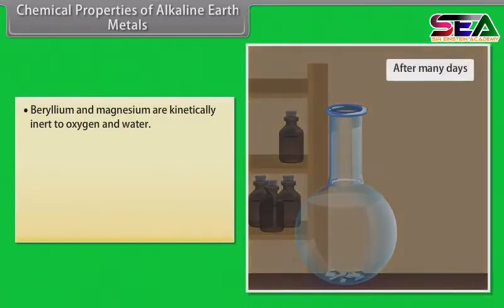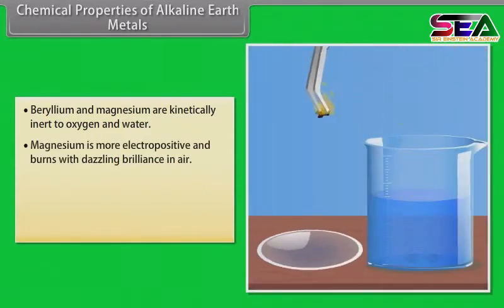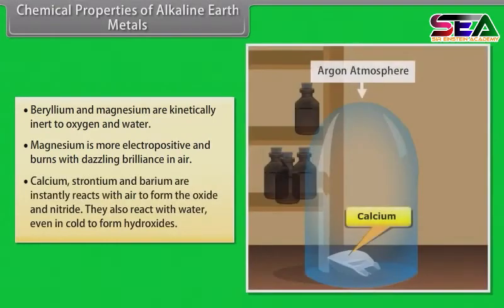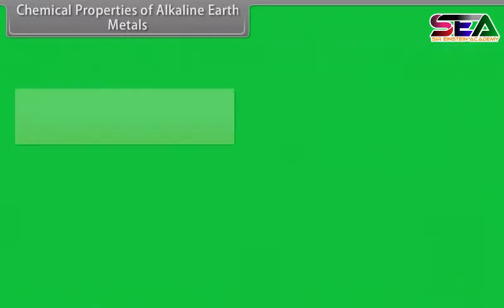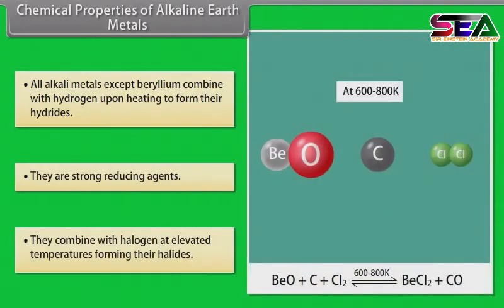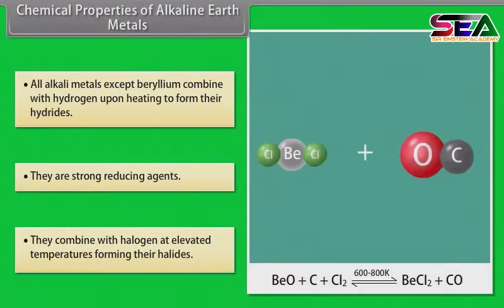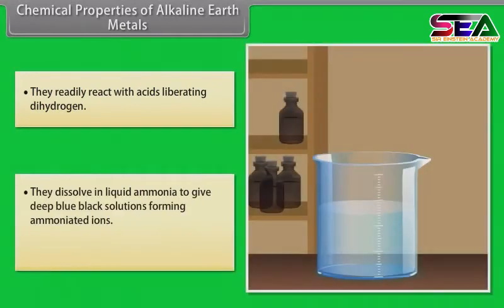Beryllium and magnesium are kinetically inert to oxygen and water. Magnesium is more electropositive and burns with dazzling brilliance in air. Calcium, strontium and barium instantly react with air to form the oxide and nitride. They also react with water, even in cold, to form hydroxides. All alkaline earth metals except beryllium combine with hydrogen upon heating to form hydrides. They are strong reducing agents, combine with halogens at elevated temperatures, react with acids liberating dihydrogen, and dissolve in liquid ammonia to give deep blue-black solutions forming ammoniated ions.